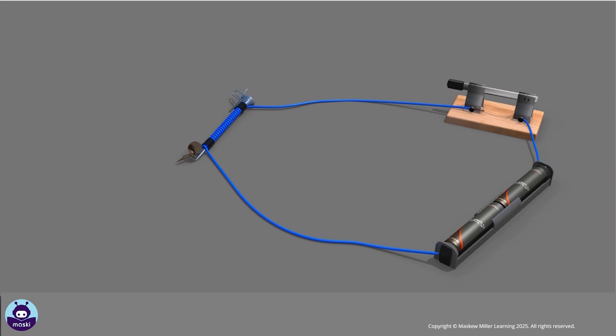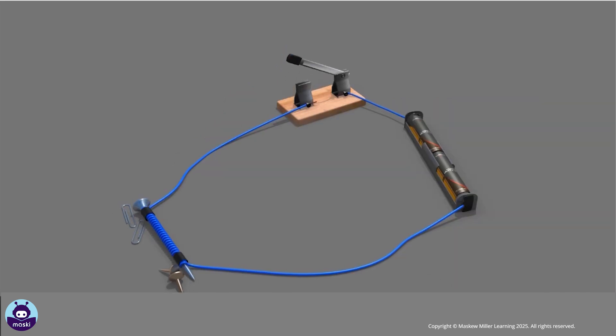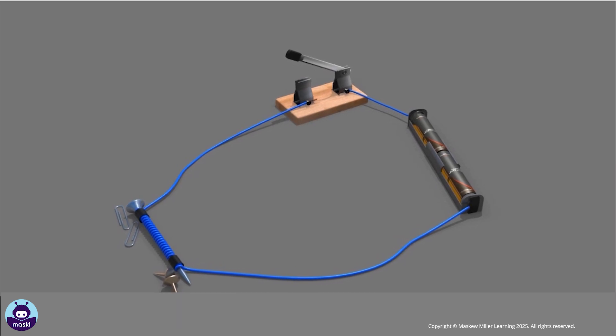The nail is now an electromagnet. Open the switch—the iron objects are no longer attracted to the nail as the electricity has been cut off.